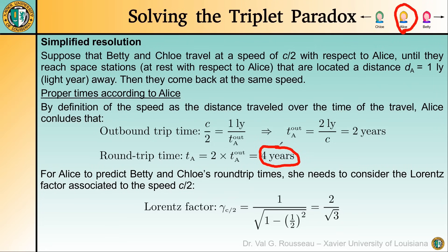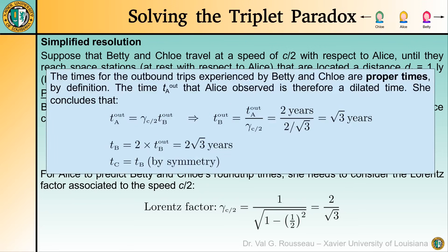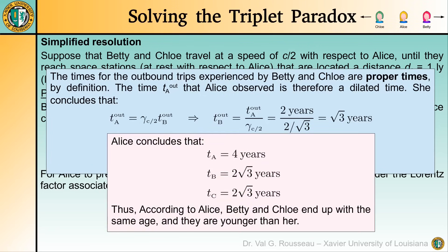In order to predict the times that elapse in Betty and Chloe's frames, Alice needs the Lorentz factor associated with their speed. For half the speed of light, this factor is exactly 2 over root of 3. Now, the outbound trip time measured by Alice is not a proper time, because the departure and arrival don't happen at the same location. But for Betty and Chloe, the outbound trip time is a proper time. Thus, Alice knows the time she observes is the proper time dilated by the Lorentz factor, so Betty and Chloe's outbound proper times are root of 3 years. The same reasoning applies to the inbound trip, giving a round trip proper time for Betty and Chloe of 2√3 years. Alice concludes that Betty and Chloe end up with the same age and are younger than her.